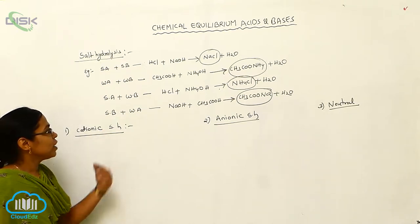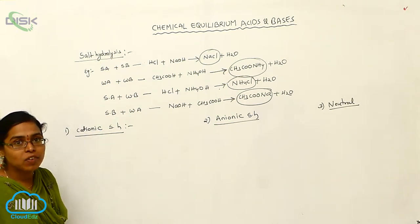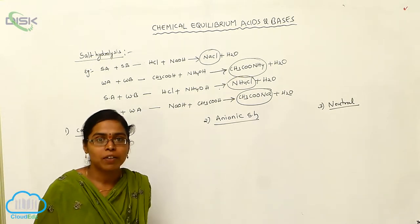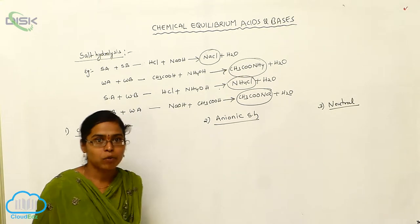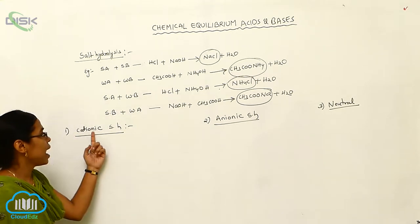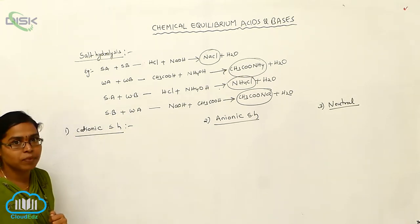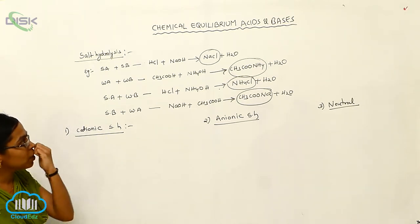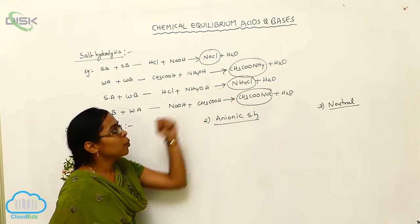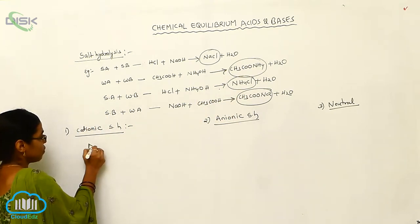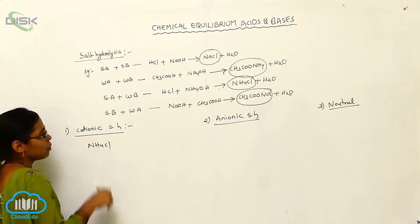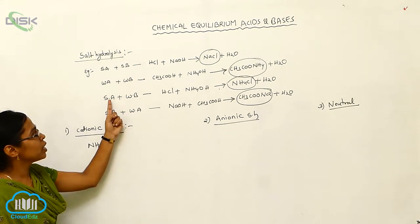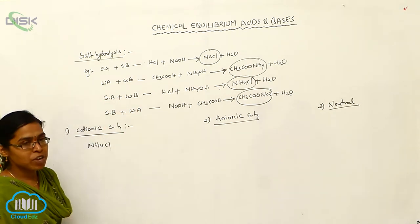First, I am taking cationic salt hydrolysis. Cationic salt hydrolysis is nothing but the salt which, on hydrolysis, forms cations only. That kind of hydrolysis is called cationic salt hydrolysis. For the cationic salt hydrolysis, I am taking the example of ammonium chloride. Ammonium chloride is formed by the combination of a strong acid plus a weak base.